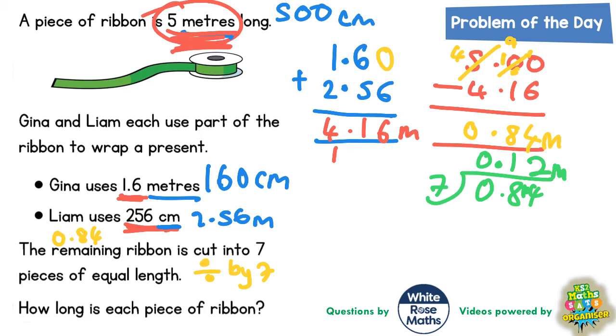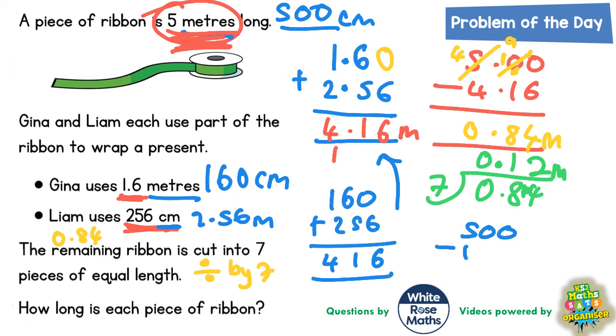We could have then added those together. We could have added 160 add 256, which is basically the same but without the decimal points. We would have still got 416. We would have then done 500 take away 416, and with a little bit of borrowing we would have ended up with 84 centimetres. 84 centimetres divided by 7 would have still been 12 centimetres.